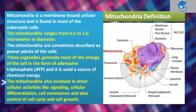Mitochondria are also involved in other cellular activities like signaling, cellular differentiation, and cell senescence — which means cell death. Mitochondria are involved in apoptosis, which is programmed cell death. They also control cell cycle and cell growth.